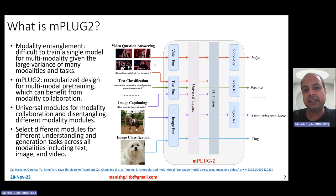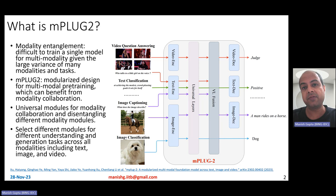On the right side there are various kinds of tasks: video question answering, text classification, image captioning, and image classification. Video question answering is a video and text task. Text classification is just a text-based task. Image captioning is an image and text task. Image classification is just an image task.